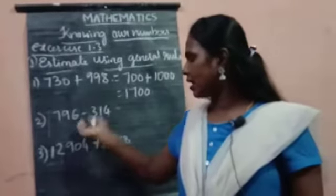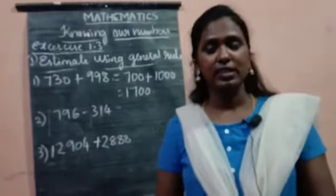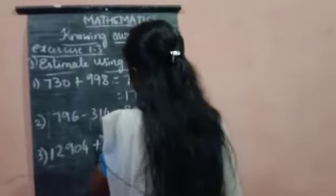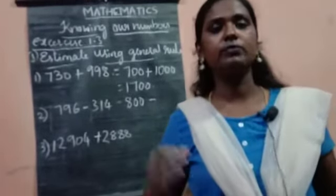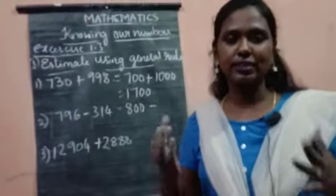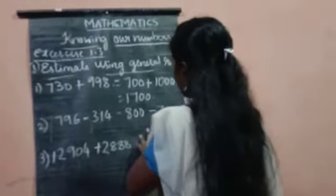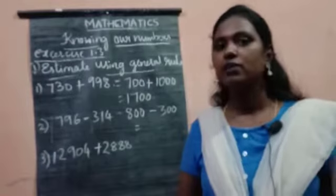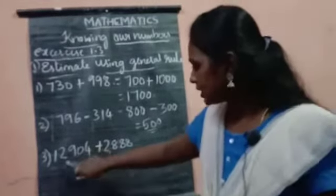Let us see another example here. 796 is there. What do you have to write? Yes, we have to write 800. And the sign here is minus. 314 is there. Consider it as just 300. If you subtract 800 minus 300, you will get 500. Easy, right?